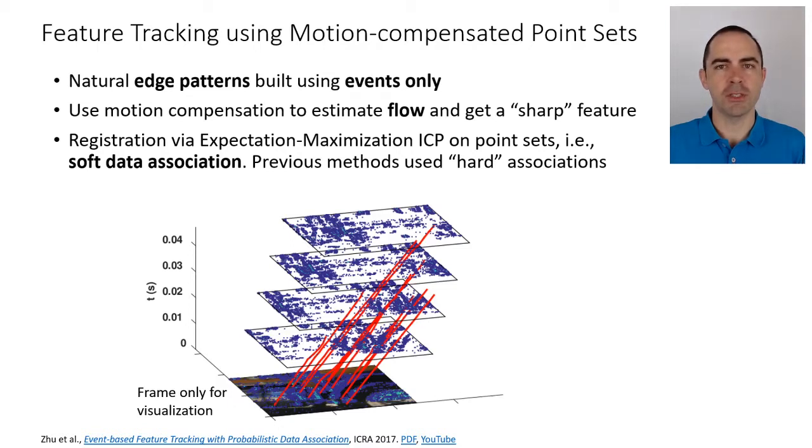Registration of these kind of features, edge-like features, is done using the expectation maximization version of ICP, iterative closest point algorithm. So iterative closest point is registering point sets, in this case two point sets. And EM, expectation maximization, is an algorithm that applies to many different problems.